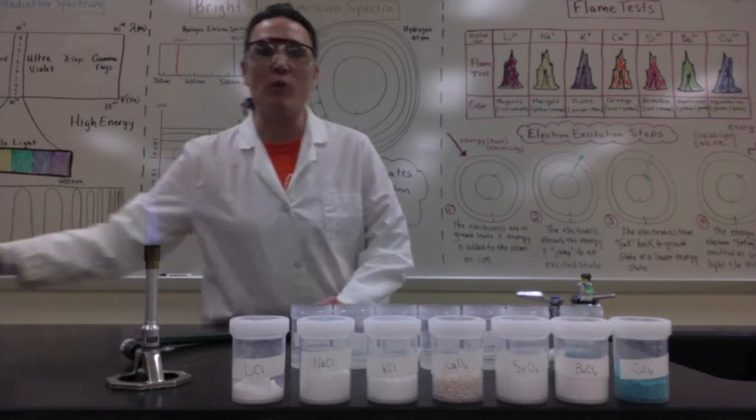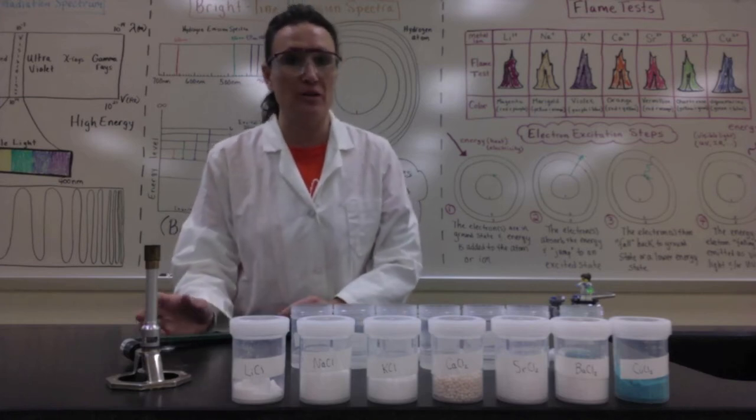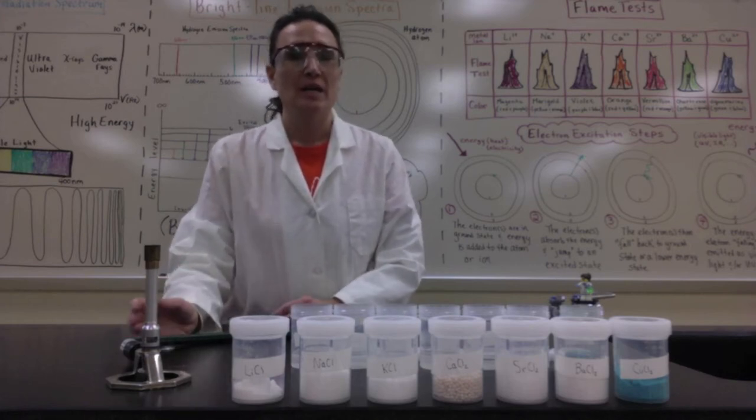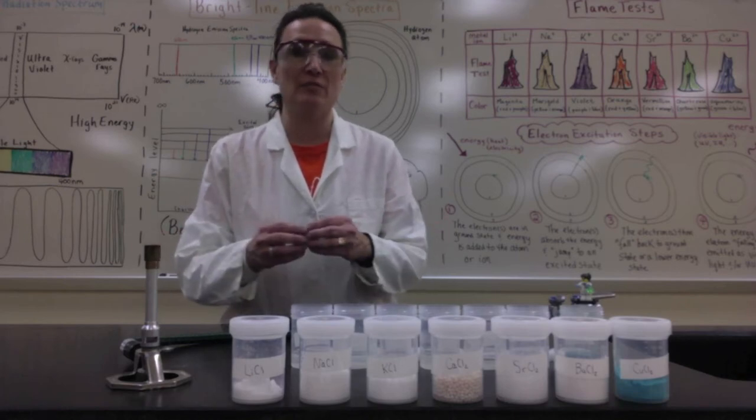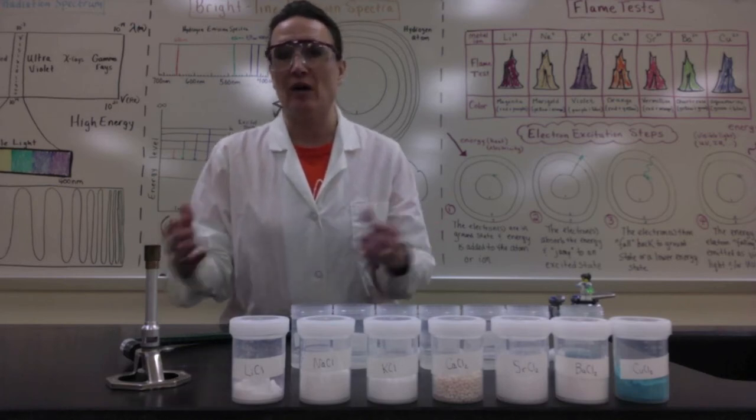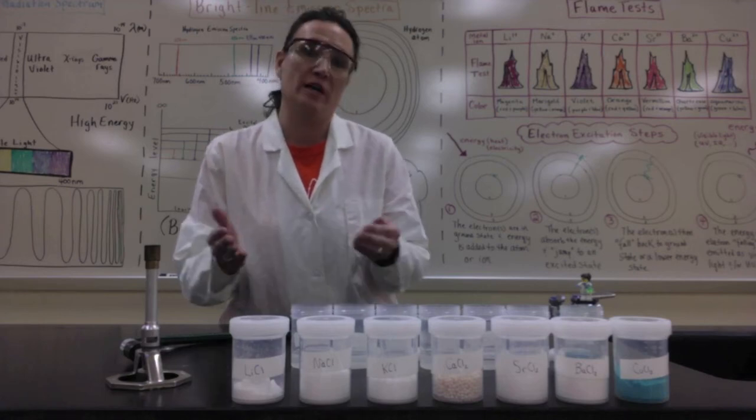The question is why are all of these metallic chlorides giving off a different color in the flame, which is called a flame test. That's what we're going to do in our next foldable: build a foldable that contains the information that explains how these atoms and ions are making these different colors and where the energy is coming from.